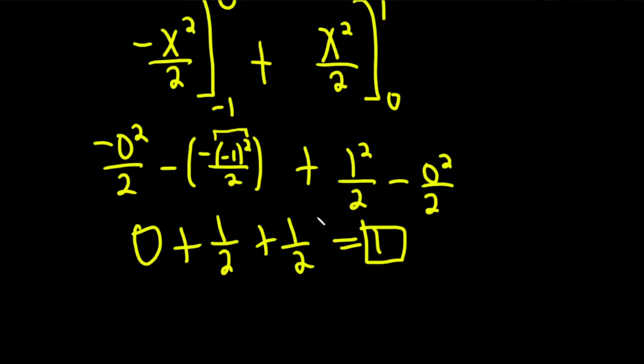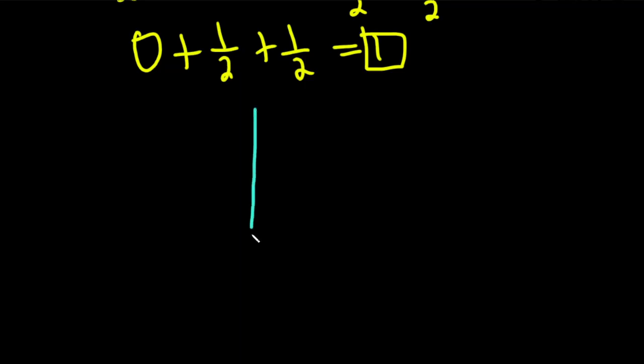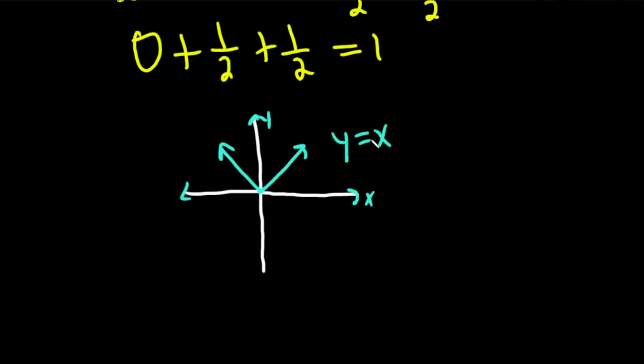So the answer is 1. Okay, so now let's look at the graph. Here's the y-axis, here's the x-axis, and we're looking at the absolute value of x, which basically looks like this. The graph is a little crooked. I just got to fix it, make it a little bit better. There we go. So the absolute value of x looks something like this. And then here's the y-axis, here's the x-axis. And recall that over here, it's equal to x. So I'll call that y1. And over here, it's equal to negative x. So I'll call that y2.